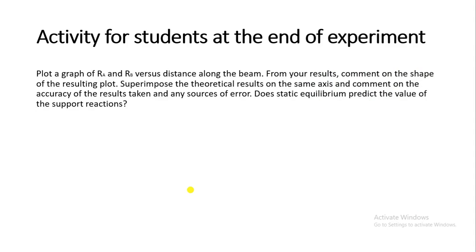Student activity at the end of Experiment 1A: plot a graph of RA and RB versus distance along the beam, comment on the shape of the resulting plot, superimpose theoretical results on the same axes, and comment on the accuracy of the results. Students should also identify any sources of error and determine whether static equilibrium correctly predicts the values of the support reactions.